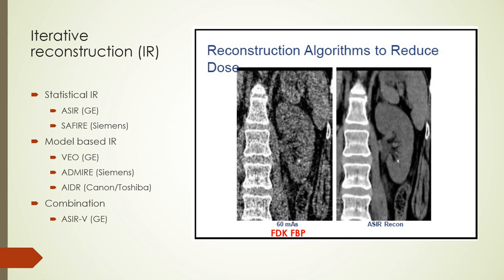Axial and helical acquisitions reconstructed with filtered back projection result in noisy images. Iterative reconstruction methods can produce lower noise images for the same dose. Iterative reconstruction can be done using a statistical approach or a model-based approach; model-based IR produces images with less noise than statistical IR. A combination model and statistical IR approach is also available and reduces reconstruction time. Different strengths of IR are available, often involving blending a percentage of FBP with the IR algorithm, enabling low-dose acquisition with high-quality low-noise images.